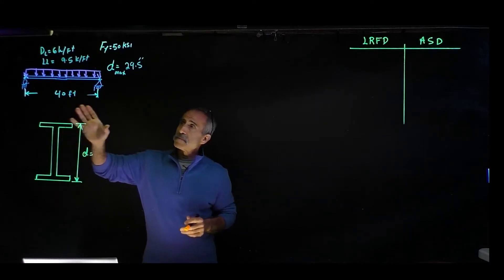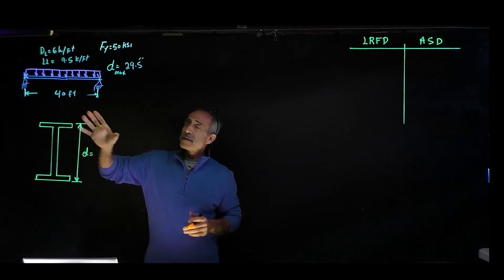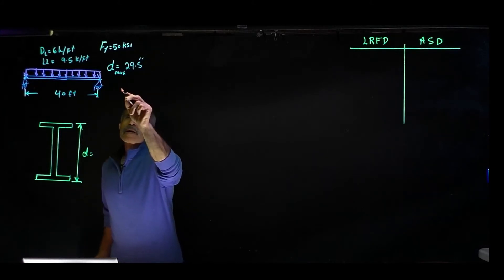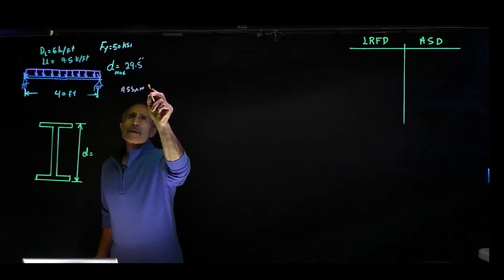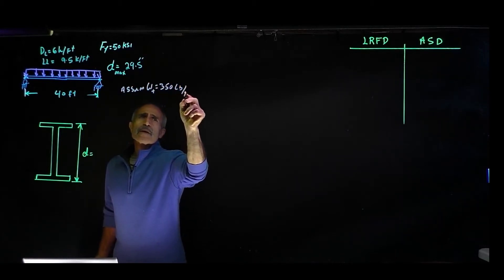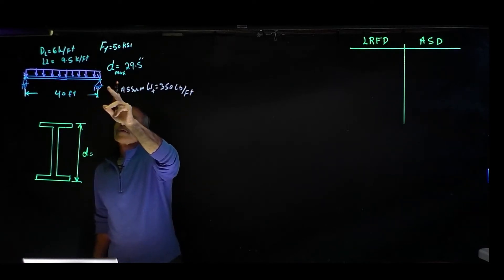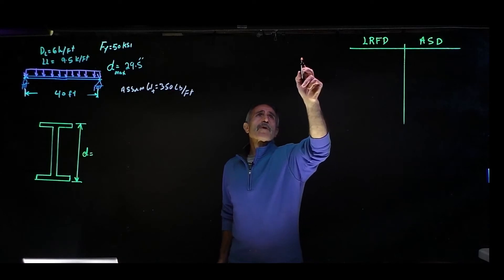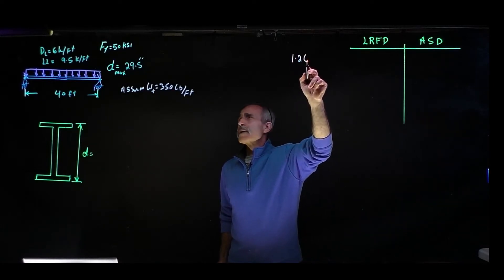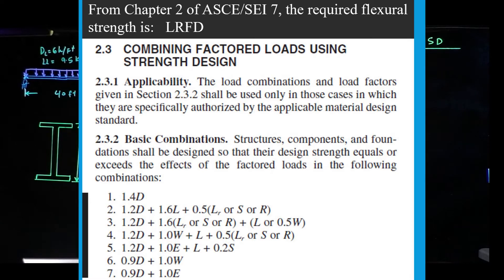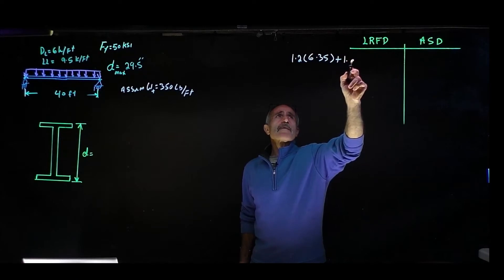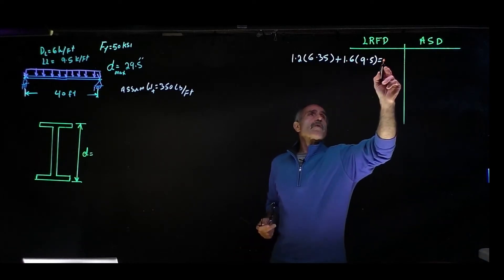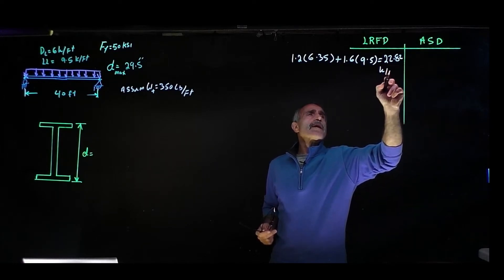One of the first things I want to do is guess at the weight of the beam. Go high so you don't have to come back and adjust. Let's say about 350 pounds per foot. So my dead load becomes 6.35. Let's calculate our load both in LRFD and ASD. This is LRFD: 1.2 times 6.35 plus 1.6 times the live load, 9.5 kip per foot. That comes out 22.82 kip per foot.